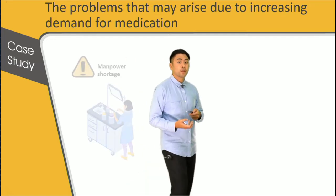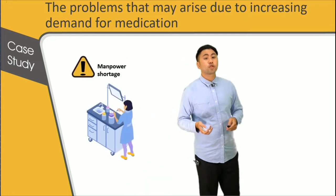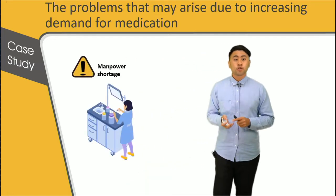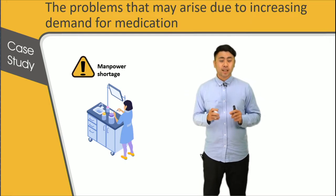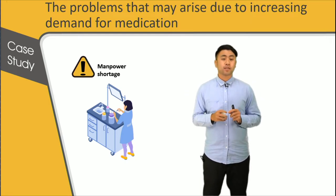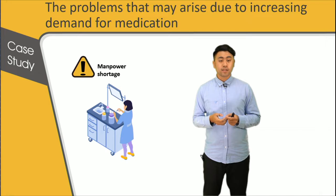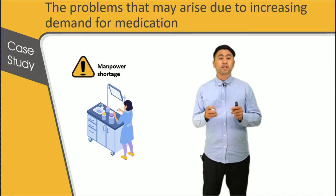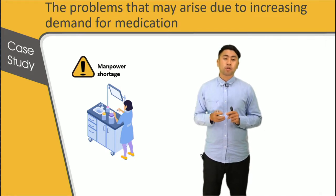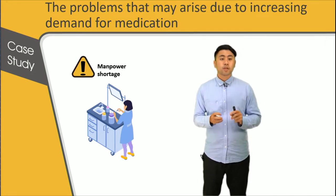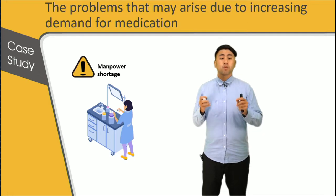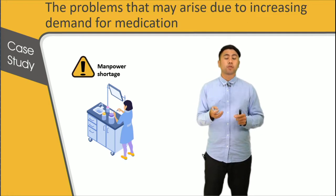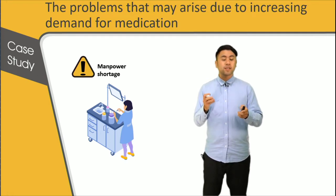First, it's manpower shortage. Generally, a patient needs at least three kinds of medicine, or maybe more than five kinds, and with limited manpower resources, the growing demand for medicine may lead to a heavy workload for pharmacists.